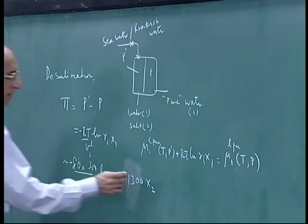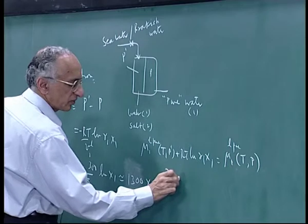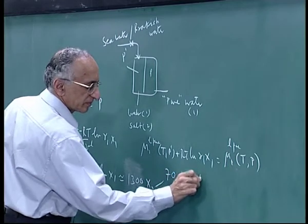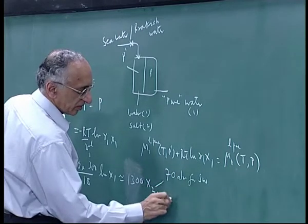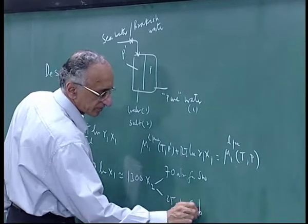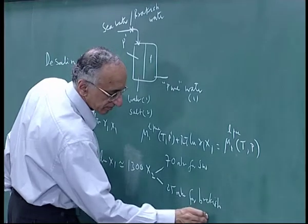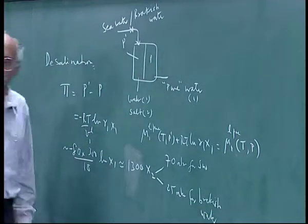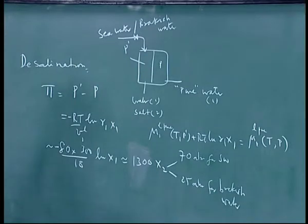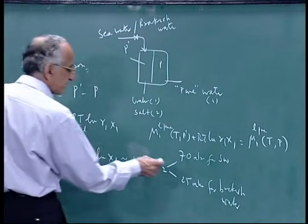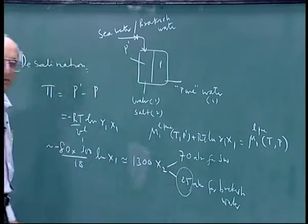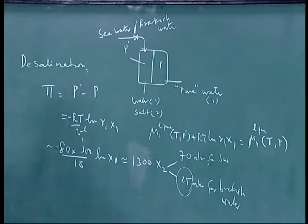So we said typically this is 70 atmospheres for seawater and about 25 atmospheres for brackish water. This is only an estimate, simply brackish water from the ground. And your membranes here are designed to withstand this 25, they are not meant for seawater.